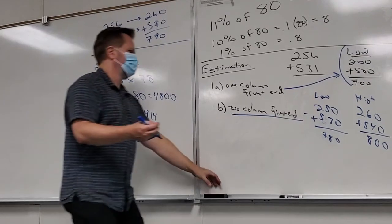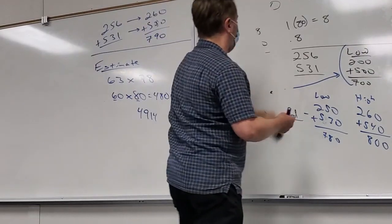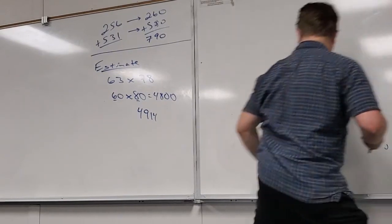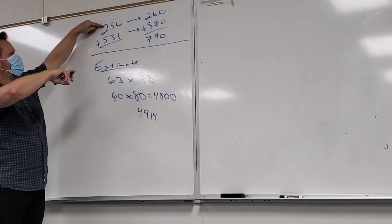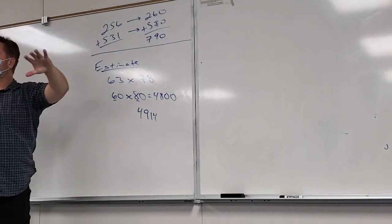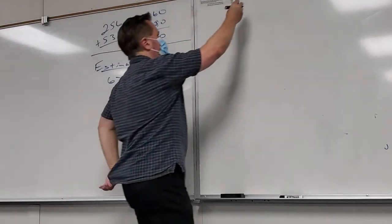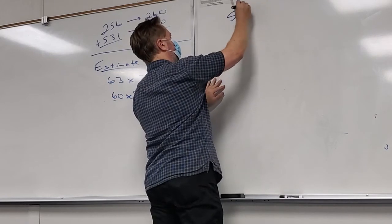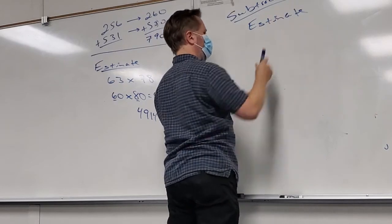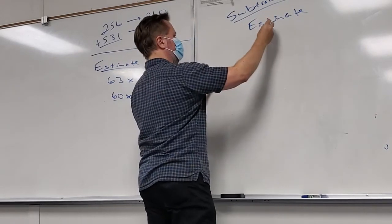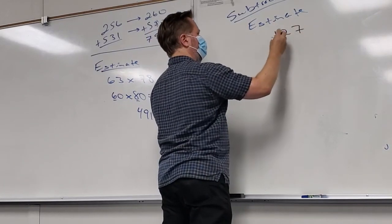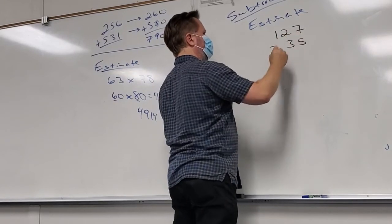For division and subtraction estimation: when you add or multiply, if one number goes up the other should go down to keep your estimate accurate. What about estimating 127 minus 35? How would you approach that?